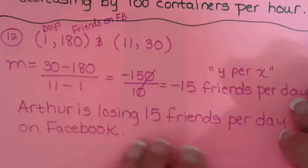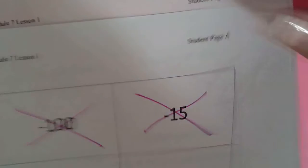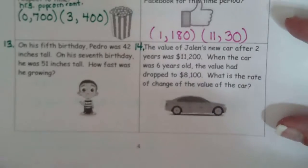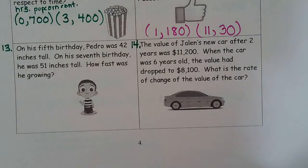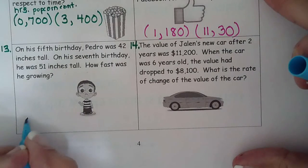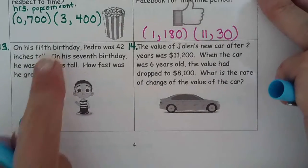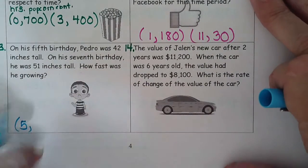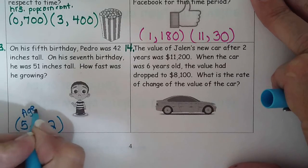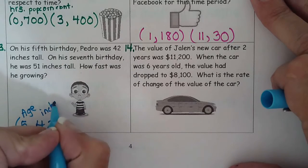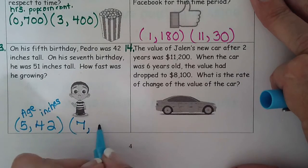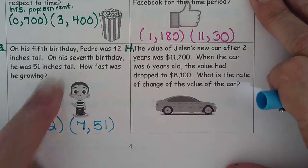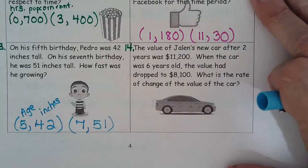Okay, two more to go. Okay, let's go to our paper and cross off. So he was losing 15, so negative 15 friends per day. Okay, now we're going to talk about Pedro. Pedro on his fifth birthday. So what number should we use? Five? Sounds like a good one, right? So on his fifth birthday, because remember time, dates, things like that are usually x. Pedro was 42 inches tall. So this is his age. This is his inches, right? Inches. On his seventh birthday, he was 51 inches tall. So fifth birthday, 42. Seventh birthday, 51.